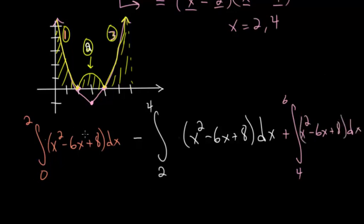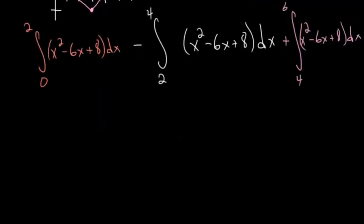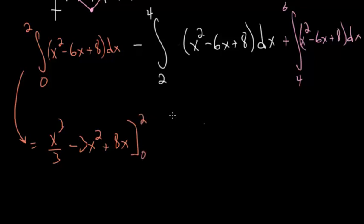Now we just have to evaluate these three integrals, and they're all pretty much the same. For this first one, evaluating term by term, we get x cubed over 3 minus 6x squared over 2, or just minus 3x squared, plus 8x, all evaluated between 0 and 2.